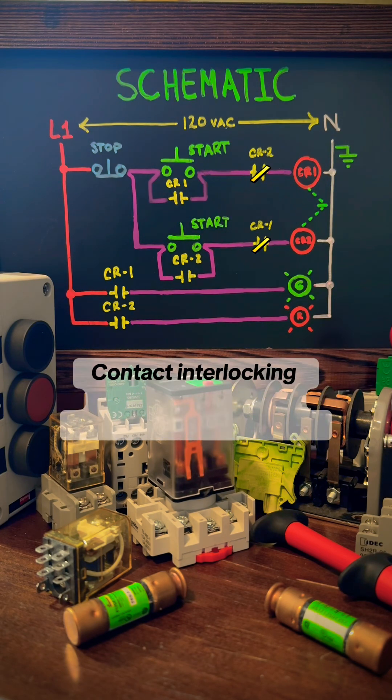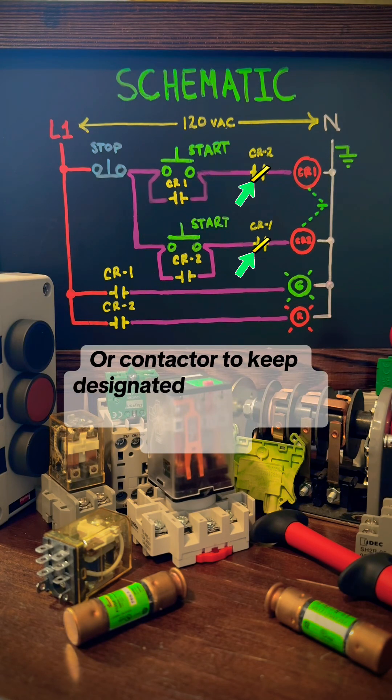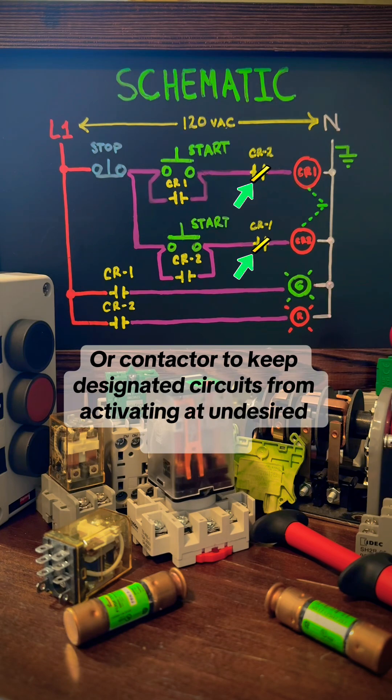Contact interlocking utilizes the normally closed contacts of a relay or contactor to keep designated circuits from activating at undesired moments.